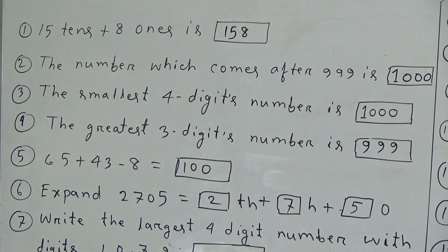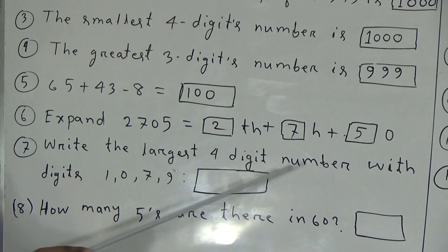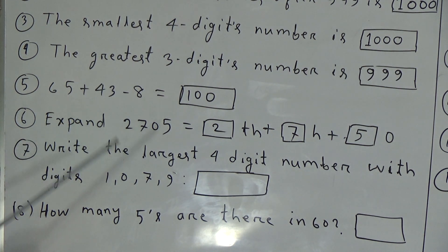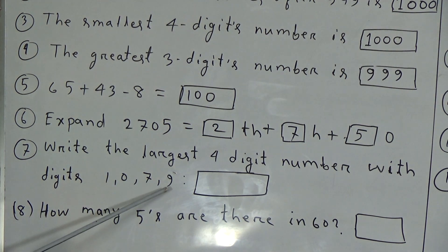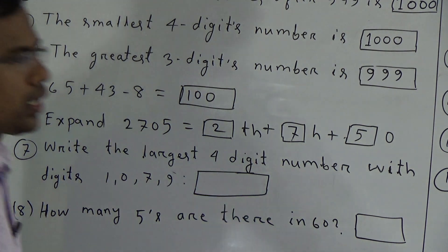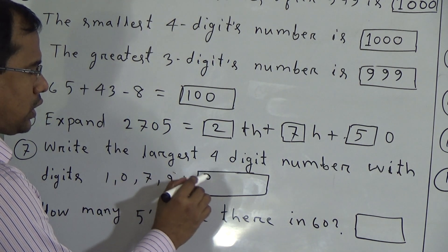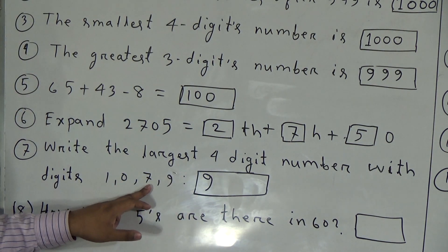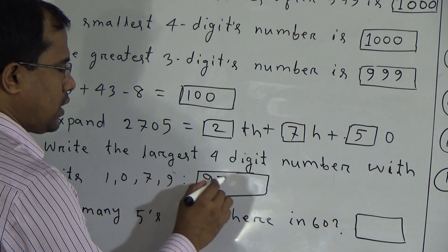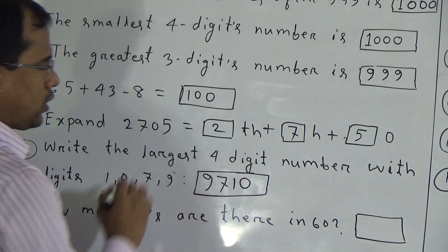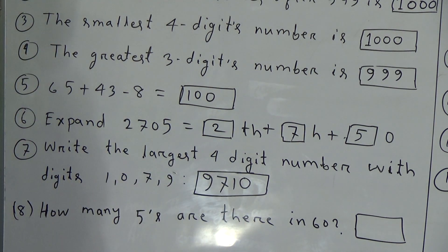Seventh question: write the largest 4-digit number with digits 1, 0, 7, 9. Since we have to write the largest number, the largest digit must go in the largest place. The largest place for a 4-digit number is the 1000s place, so we put 9 there. Second largest digit is 7, which goes in the 100s place. Then 1 in the 10s place and 0 in the 1s place. So the largest 4-digit number using these digits is 9710.